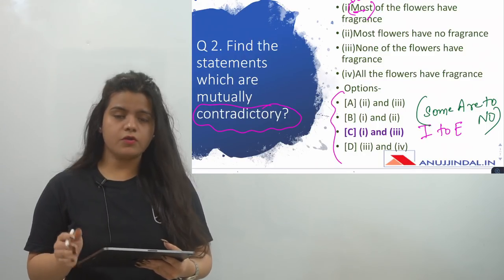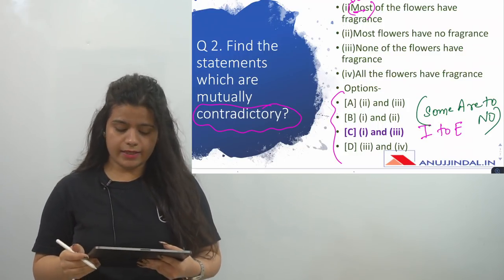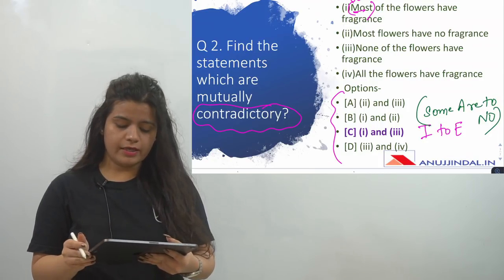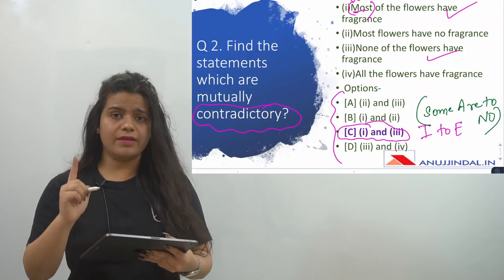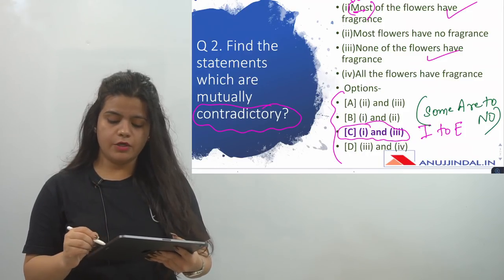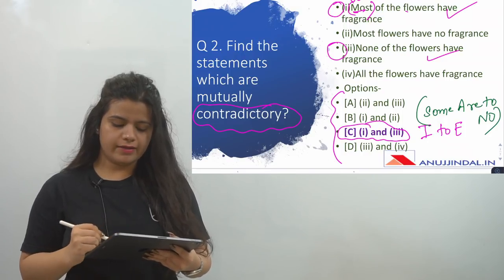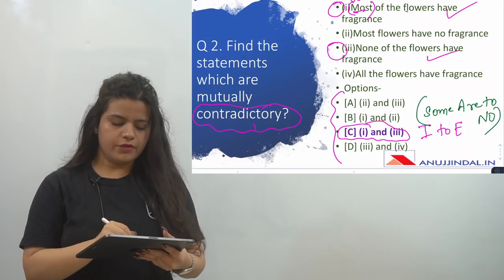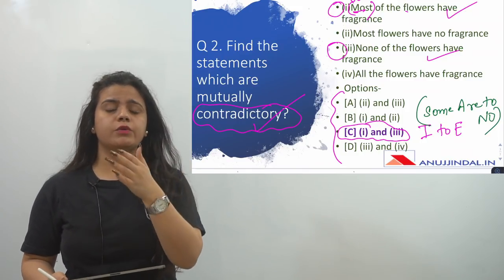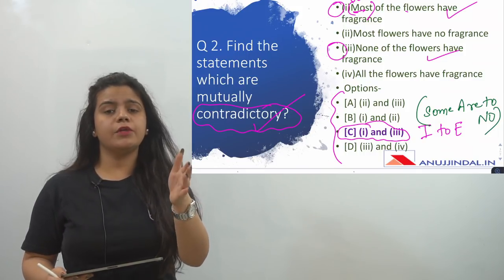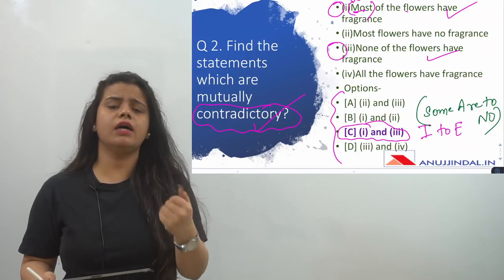Looking at the options for contradictory, the formula used is i to e — that means 'some are' to 'none.' So some of the flowers have fragrance corresponds to none of the flowers have fragrance. The contradictory formula applies to these two options, making the first and third the correct answer. This question takes hardly 30 seconds if you know the formula properly. Make sure you study the universal laws of opposition and watch our syllogism video for the formulas and tricks.